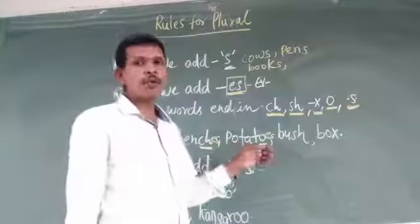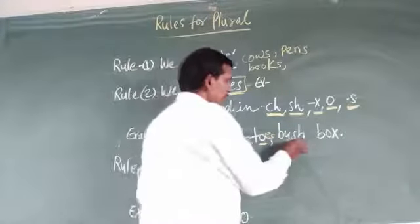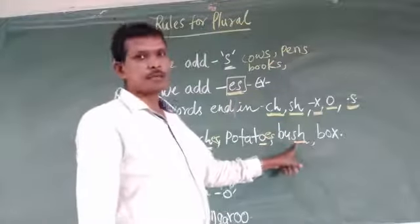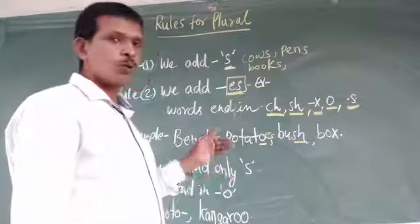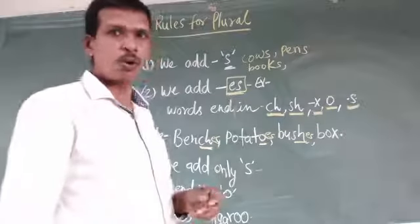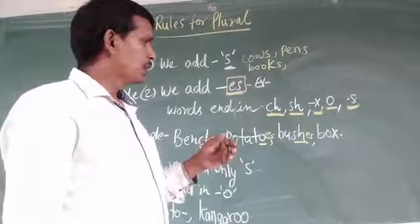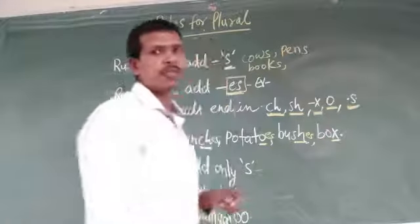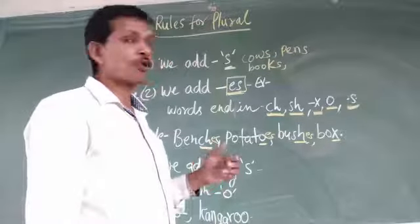Now we can see another example: bush ending with SH. We also add 'es': bushes. Another word ending with letter X: box. It will add 'es': boxes.